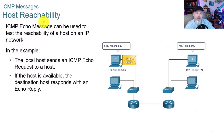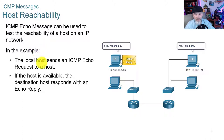For host reachability, the ICMP echo message can be used to test the reachability of a host on an IP network. The local host sends an ICMP echo request to a host, and if the host is available, the destination host responds with an echo reply.